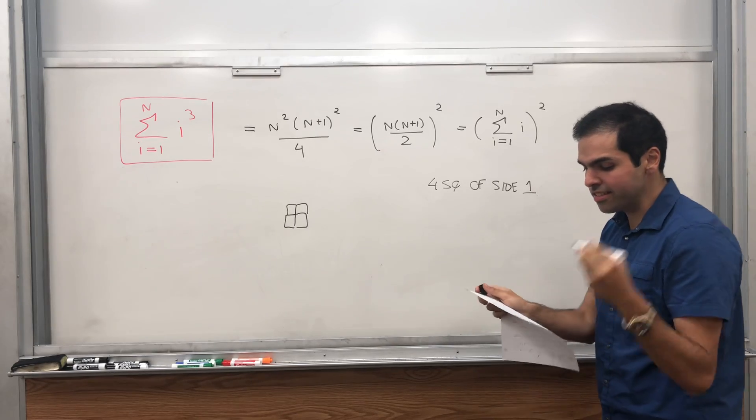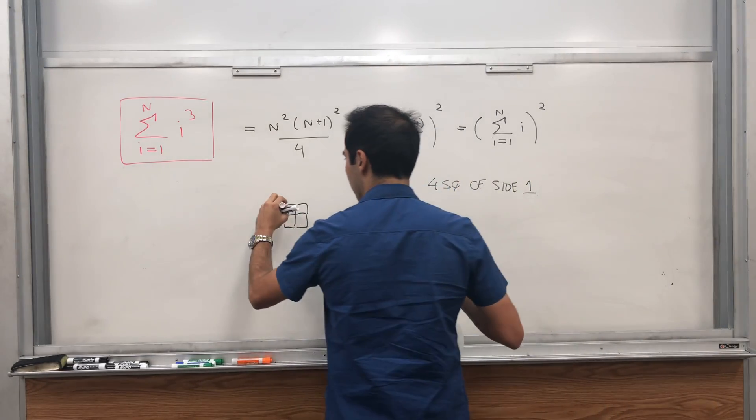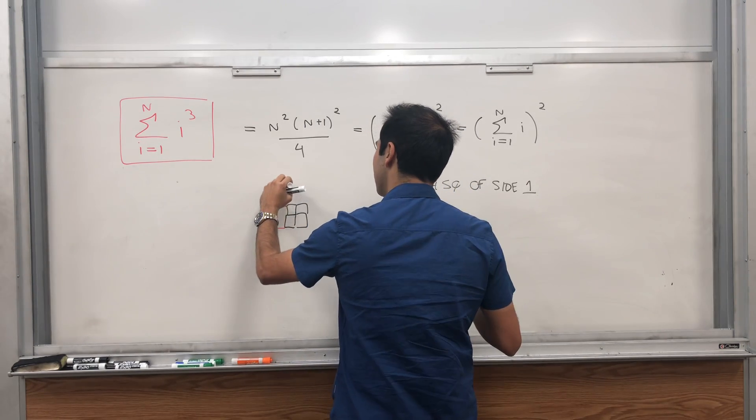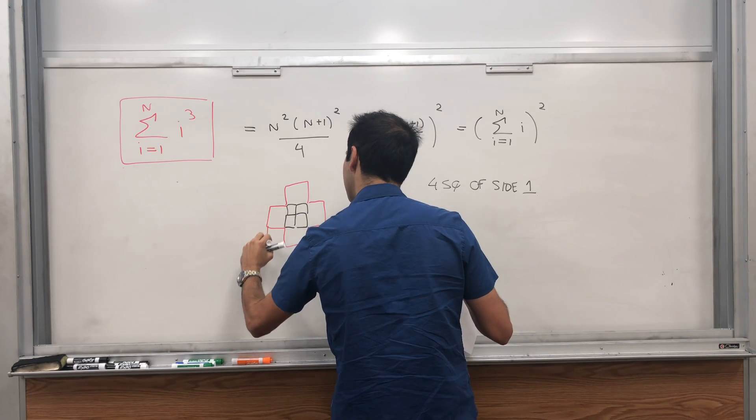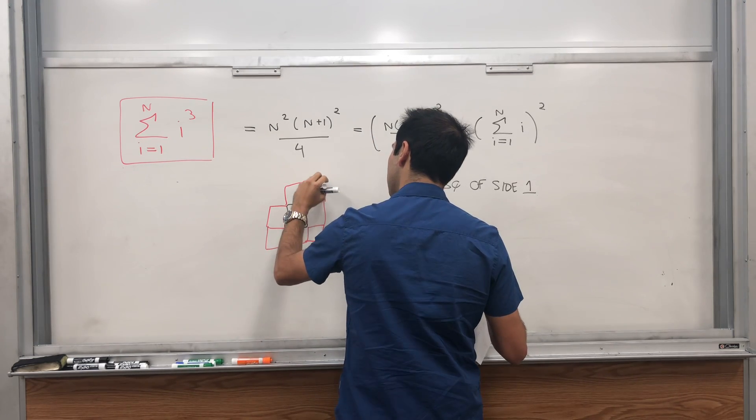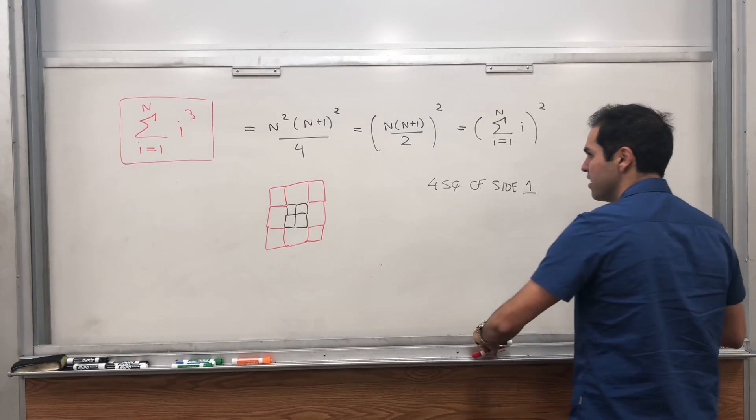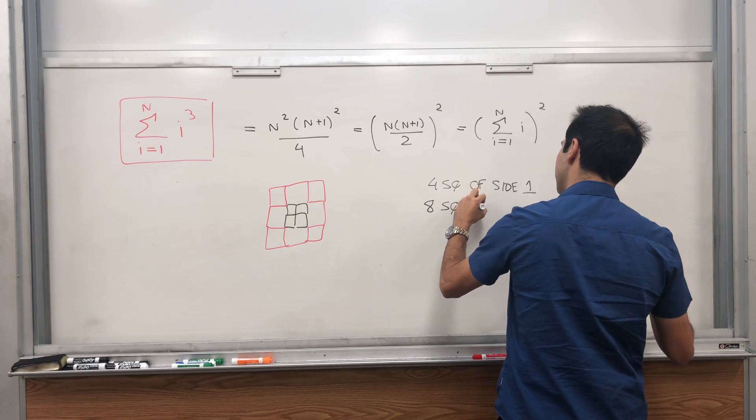And then you surround this with 8 squares of side 2. In other words, complete, literally complete the square to get a bigger square. You see, total we have 9 minus 1, which is 8. So 8 squares of side 2.